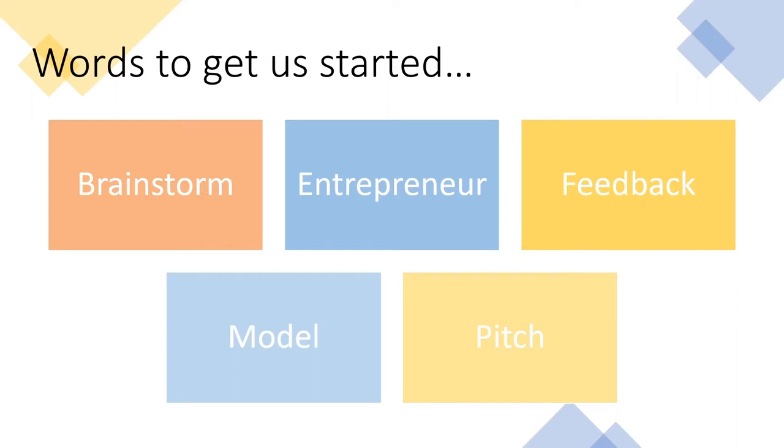Here are words to get us started. Brainstorm is to come up with an idea. An entrepreneur is someone who starts a business. Feedback is what you get after you ask about a design. People will give you feedback in response to your question. A model is what your toy will look like. And a pitch is what you'll tell us to buy a toy. You don't want to just say buy my toy. You want to say why we should buy your toy.